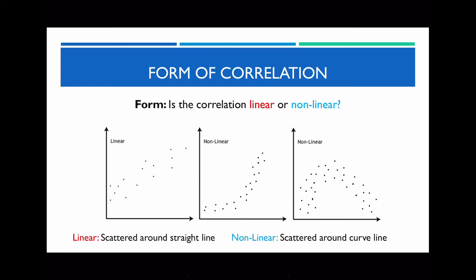The last thing I want to talk about in terms of describing the correlation is the form. All we are doing is identifying whether the correlation is going to be linear, meaning a straight line, or non-linear. On the left-hand side, this is linear because if you draw a line of best fit, it's going to be a straight line. Whereas in the middle graph, notice that it starts to curve up — because it's curving, it no longer follows the straight line, so it's considered to be non-linear.